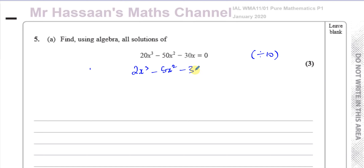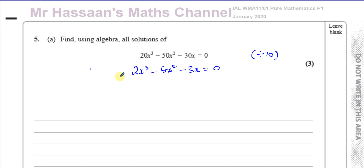That's just dividing both sides by 10 to make life easier. I can do this as an equation — I can divide both sides by 10. If it was an expression and I was trying to factorize it, I wouldn't be able to do that because you don't have two sides to divide by. So you have to keep the 10 as a factor, but as this is an equation we can divide both sides by 10 and the solution will be the same.